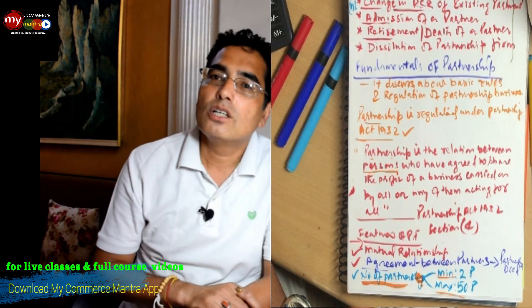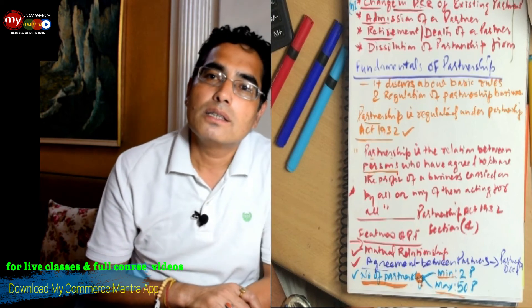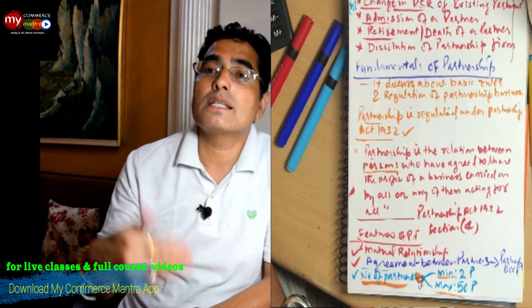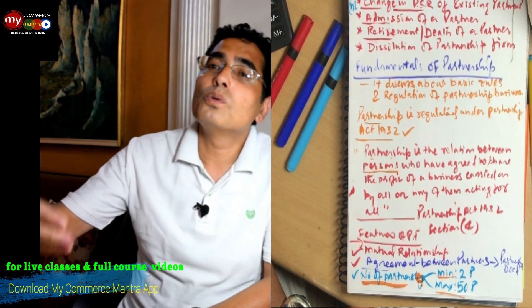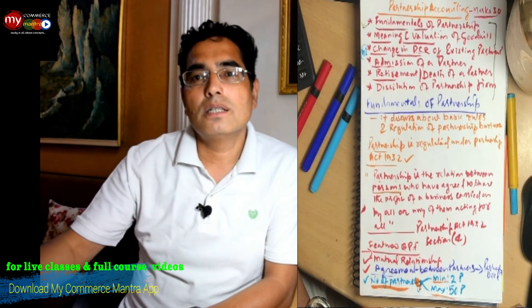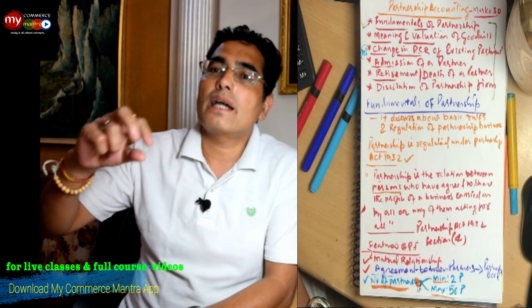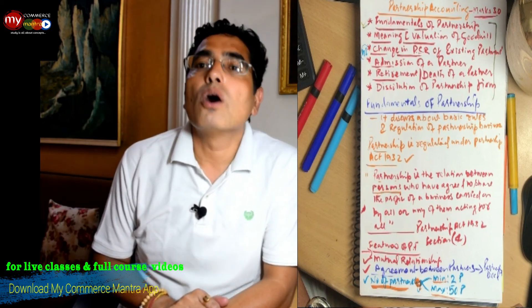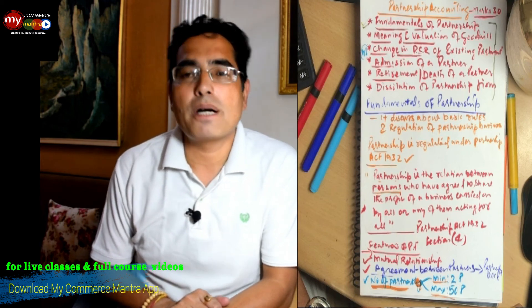That is what it says: 'any of them acting for all.' If everyone wants, they can assign this right to take active part in the business to any particular partner, and such particular partner can look after the business activity and run the business for or on behalf of all the partners.